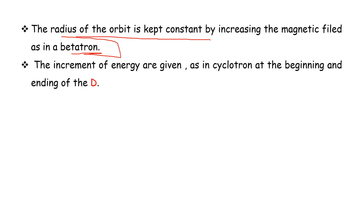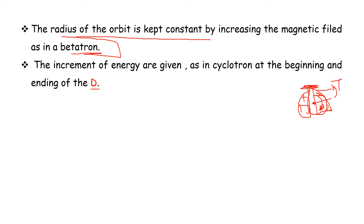The increment of energy is given as in cyclotron, at the beginning and ending of the D. The cyclotron has two disks — D1 and D2 — with the magnetic field across the disks. The electric field is at the center, and the semicircle alternates positive to negative and negative to positive. Finally, target T is reached.